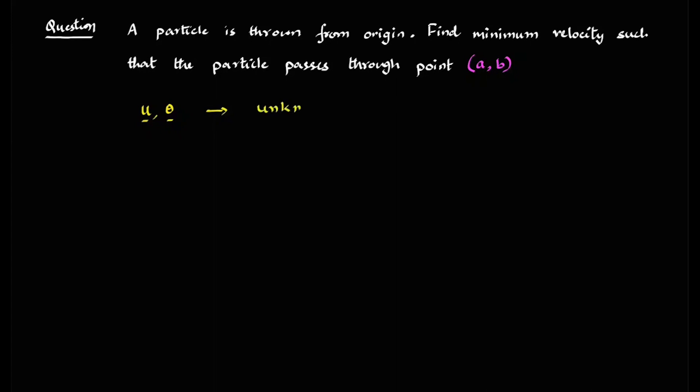And what is given is some value of Y is given that it passes through some known point Y which is equal to B and X at a given point is A. And it starts from origin. So obviously, these two are the points through which it passes.